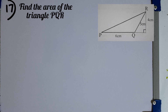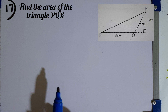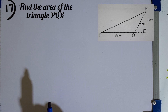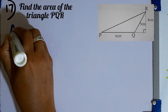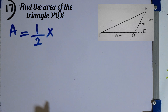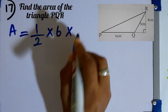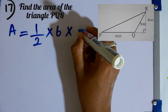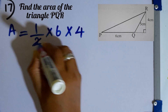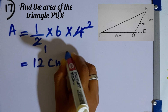Question number 17. Find the area of triangle PQR. The area of a triangle equals half times base times perpendicular height. So: half times 6 centimeters times 4 centimeters. 2 times 1 and 2 times 2 gives 12 square centimeters as the answer.